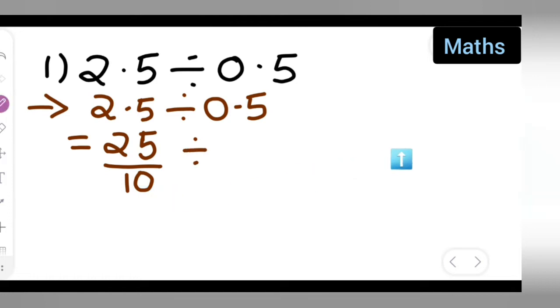Now write divide, put it as it is. So this will be 5 upon 10. Now we can divide it easily. 25 upon 10 you can write it as it is. Don't do any changes with this, because we are dividing this by 5 upon 10.